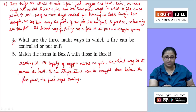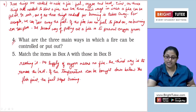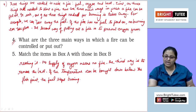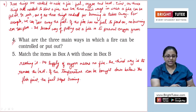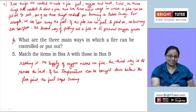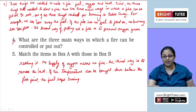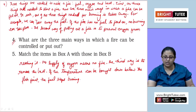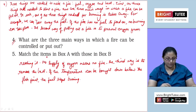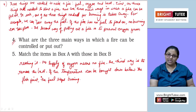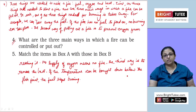Three things are needed to make a fire: fuel, oxygen, and heat. There are three main ways in which a fire can be put out. In each one, one of the three things needed for burning is taken away. We can take away the fuel — if the fire has no fuel to feed on, no burning can take place. The second way is to prevent oxygen from reaching it; no supply of oxygen means no fire. The third way is to remove the heat — if the temperature can be brought down below the flash point, the fuel stops burning.